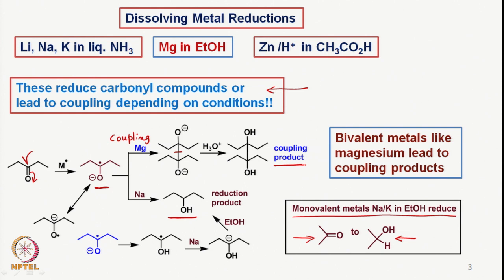One can see that this particular radical anion would be in resonance with another radical anion, so there is a stability associated with it. This radical anion, under protic conditions such as liquid ammonia, receives a proton to form this radical, which then again receives an electron to form the anion. That anion then gets protonated with ethanol to form this particular hydroxy compound, where this hydrogen also comes in.